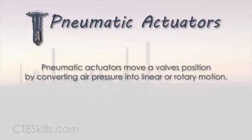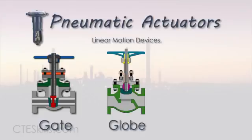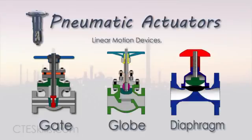Pneumatic actuators move a valve's position by converting air pressure into linear or rotary motion. Linear motion devices open and close valves such as gate, globe, diaphragm, and others with a sliding stem to control the position of the flow control element.